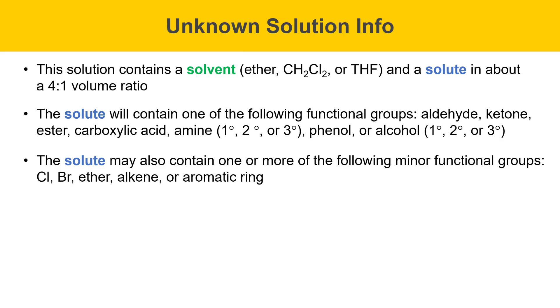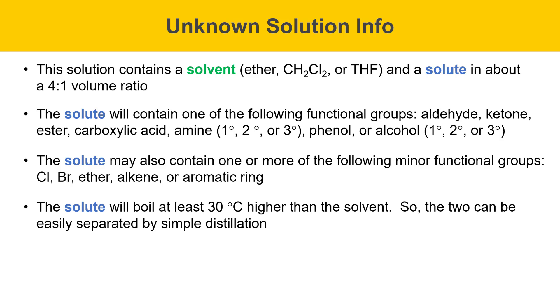Chlorine and bromine, for example, you'll likely need a mass spectrum to identify. The solute will also boil at least 30 degrees higher than the solvent, and that enabled us to separate the two by simple distillation. And your solute may be a solid or a liquid. Finally, your unknown solution has a code that should be written down in your notebook.